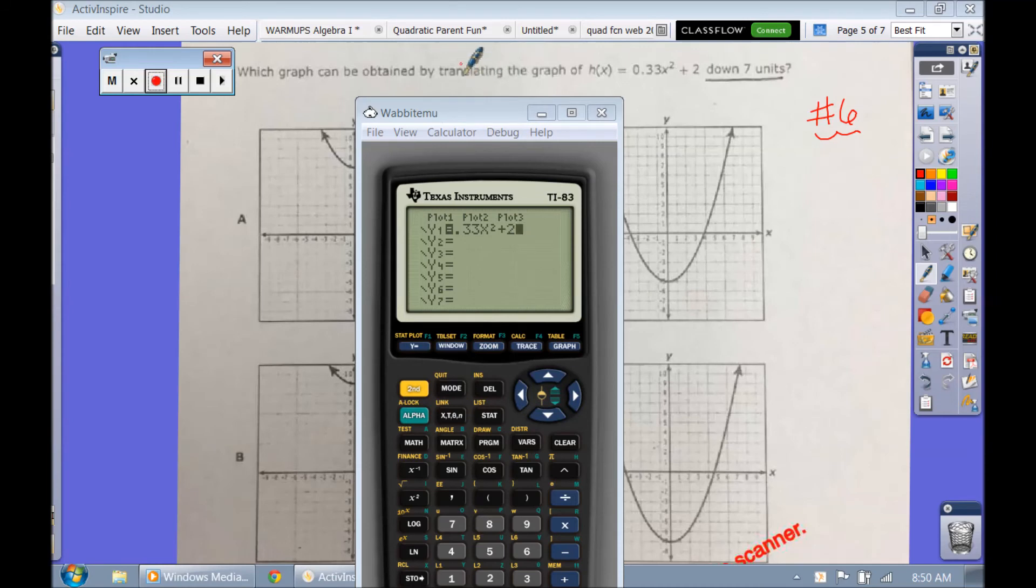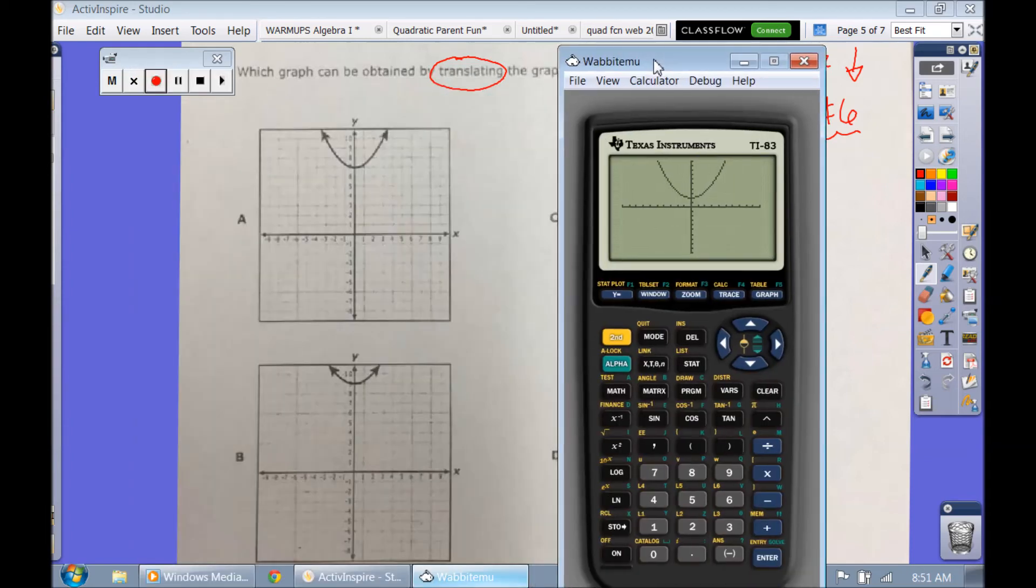All right. So we punched in the equation. Translate means to move. So we're going to look at the original graph here that we punched in our calculator. And then let's move it, or let's shift it 7 units down. So that's what the original looks like. So which answer choice would shift this 7 units down? Well, if you go 7 units down from where it's at, it'll put that vertex at negative 5. So you're just counting 7 units down. So you just find the answer choice that's going to be at negative 5 here.